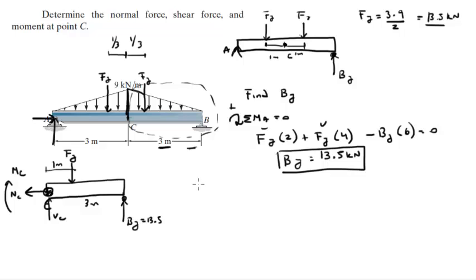Let's find the normal force first since it's the easiest. There's no other horizontal force, so N_C is equal to zero. Easy.